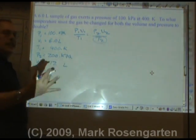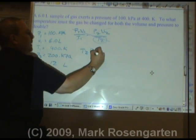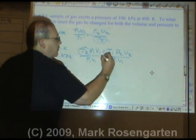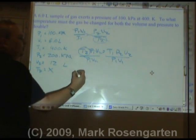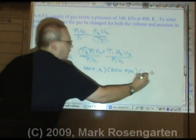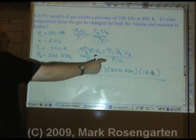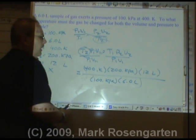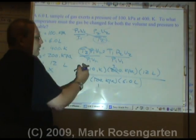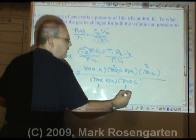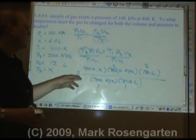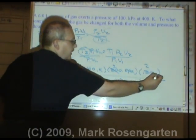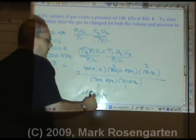Now we're trying to solve for T2, but T2 is in the denominator, so we cross multiply: T2 P1 V1 equals T1 P2 V2. Divide both sides by P1 V1 to isolate T2. Plugging in: T1 times P2 times V2 over P1 times V1. Notice that 200 and 100 simplifies to 2 over 1, and 12 and 6 simplifies to 2 over 1 — so in some cases you don't even need a calculator. 400 times 2 is 800, times 2 is 1600 kelvin. Kilopascals cancel and liters cancel, leaving us with kelvin. 2 sig figs — 1600 kelvin.